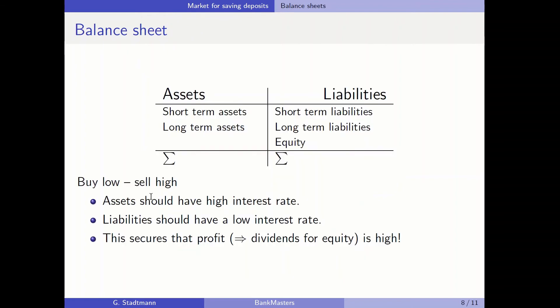Now let's switch to the balance sheet. The stylized balance sheet shows assets on the left side — distinguished as short-term and long-term — and liabilities on the right side, split into short-term liabilities, long-term liabilities, and equity. The overall formula: buy low sell high, so assets carry a high interest rate and liabilities carry a low interest rate, securing high profit and dividends for equity.